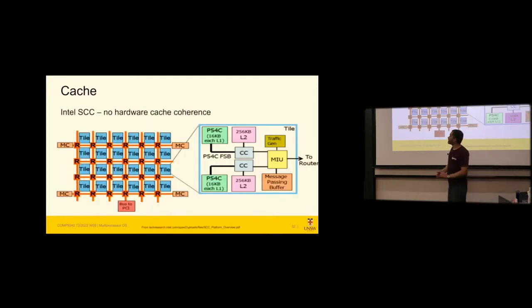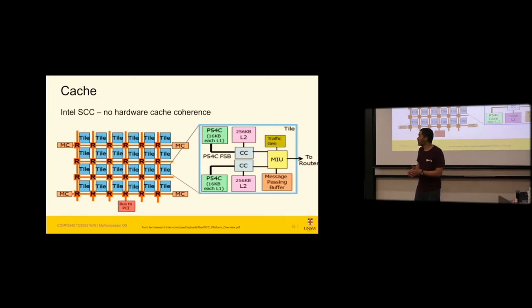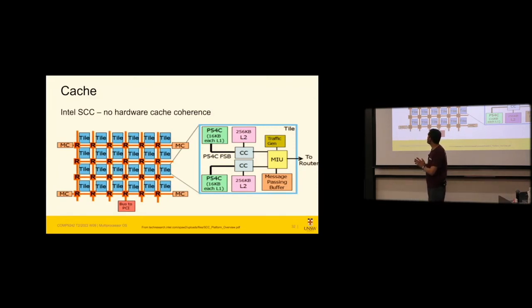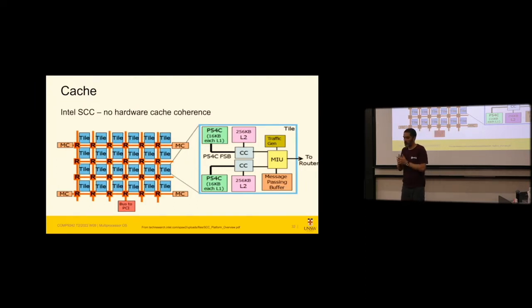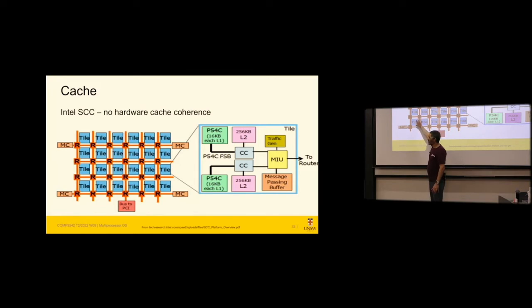Then there was the Intel Single Chip Cloud Computer — an experimental processor. The idea was to build a many-core processor using fairly weak cores. Built around 2010, each core was like an original Pentium — pretty weak for those days — but there were a lot of them.